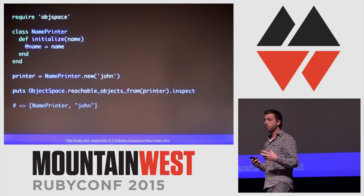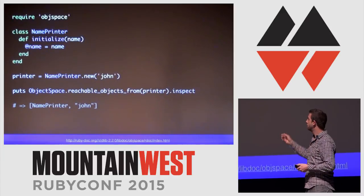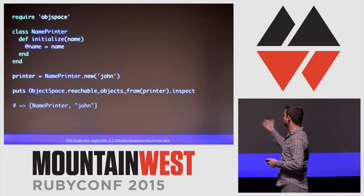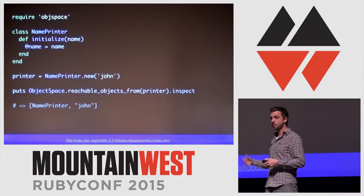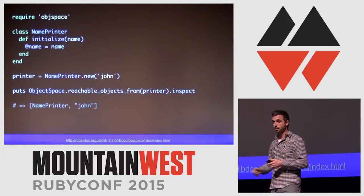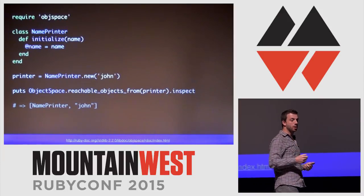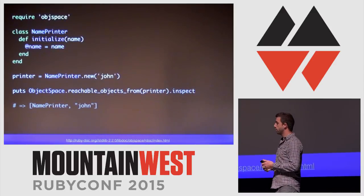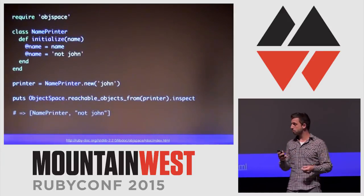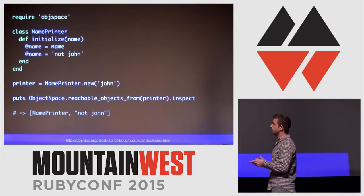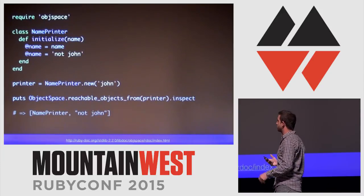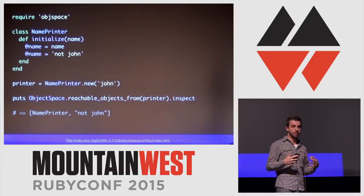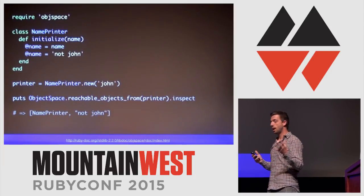To look at a quick example: we define a class called NamePrinter which takes a name, then make a new instance passing it 'John'. Going through reachable_objects_from that NamePrinter, we get back the NamePrinter class and the string 'John', which is expected. If that reachable objects array is empty, the object is ready to be garbage collected. If we change the initializer to instantly overwrite the name attribute, the reachable objects set no longer includes 'John', meaning this object no longer holds a reference to it.